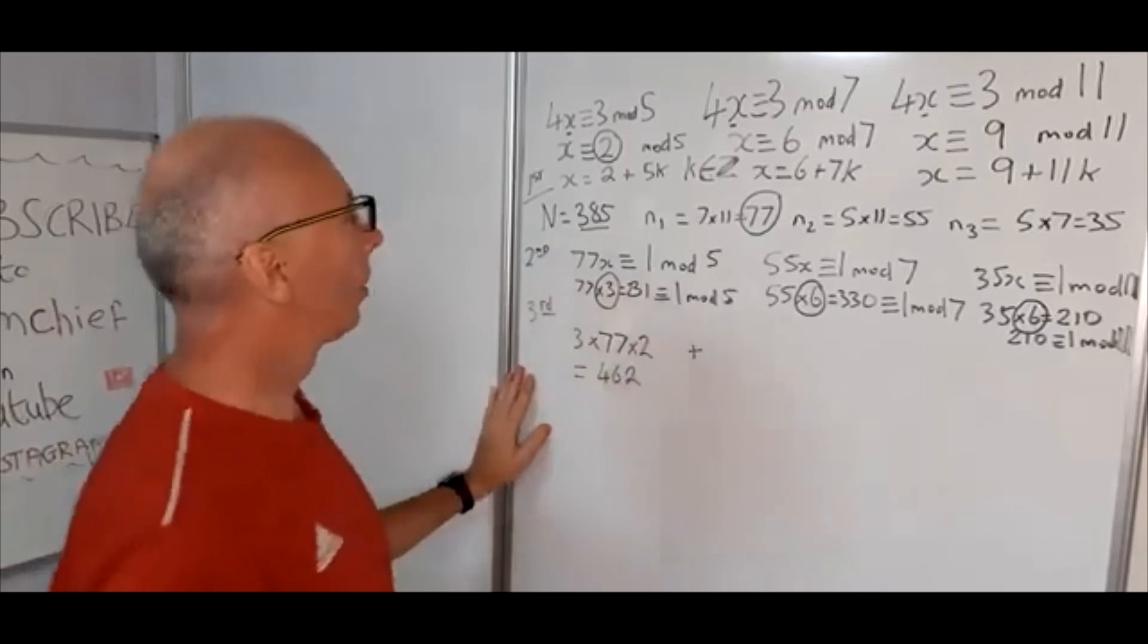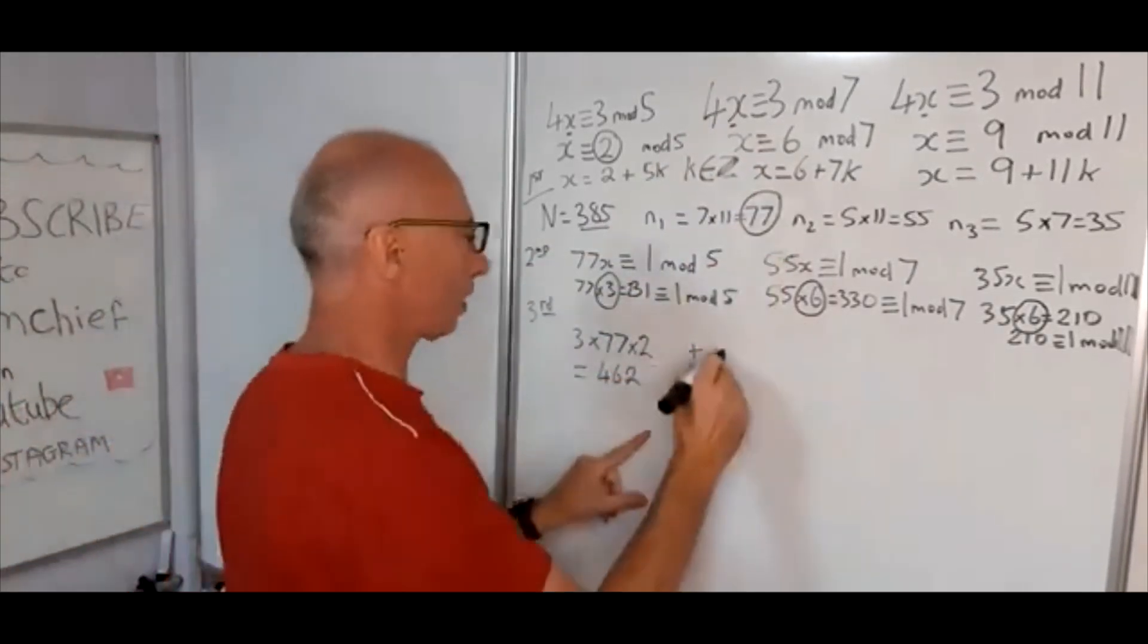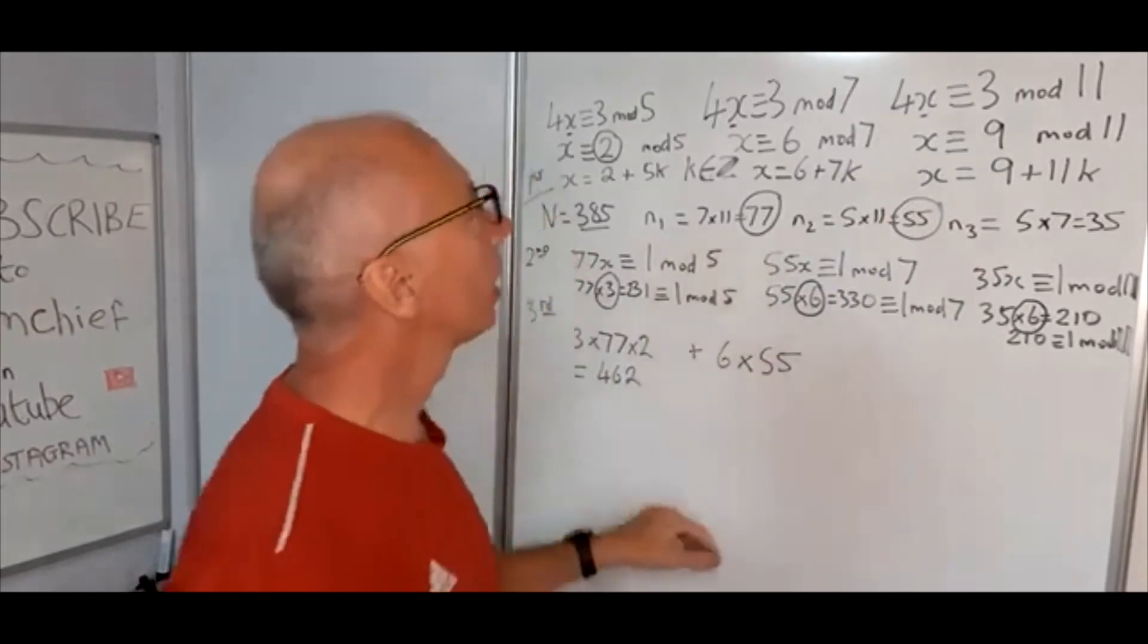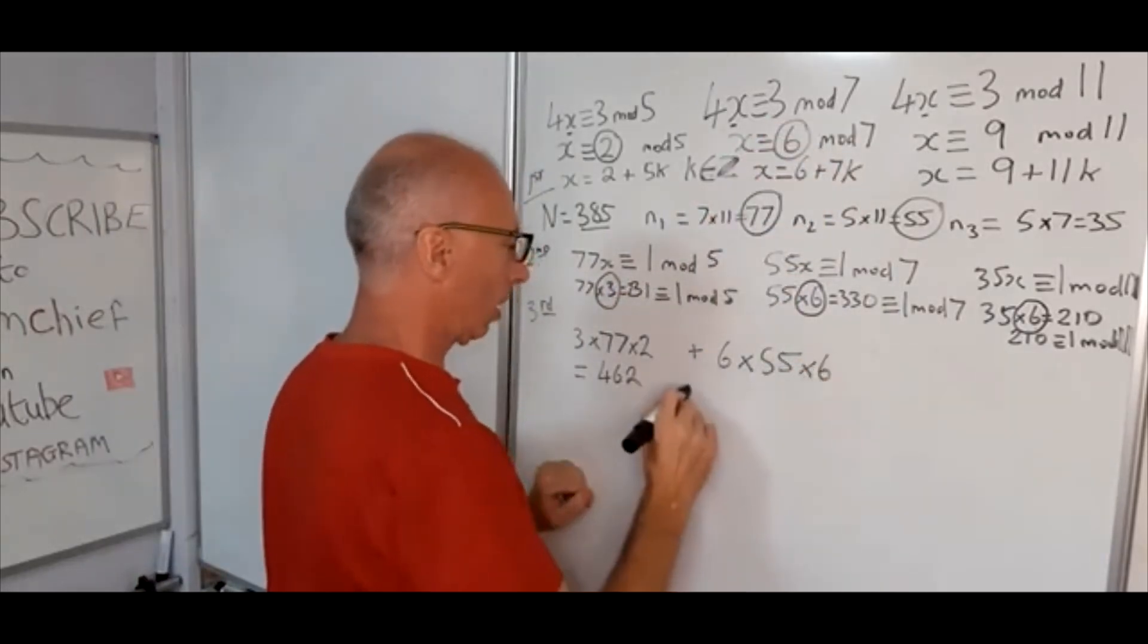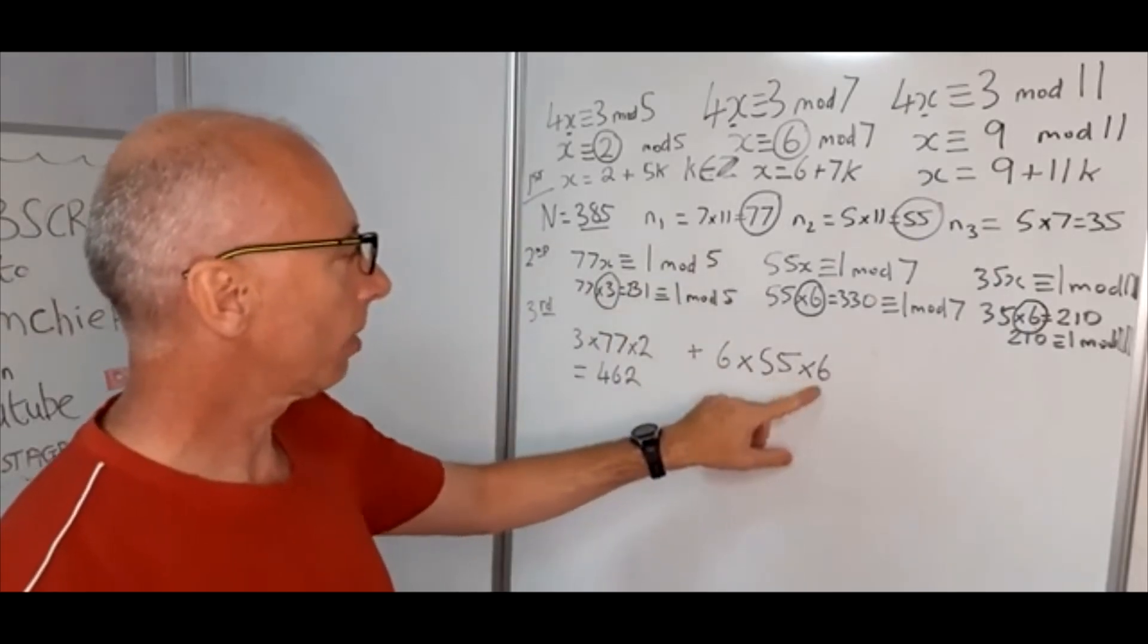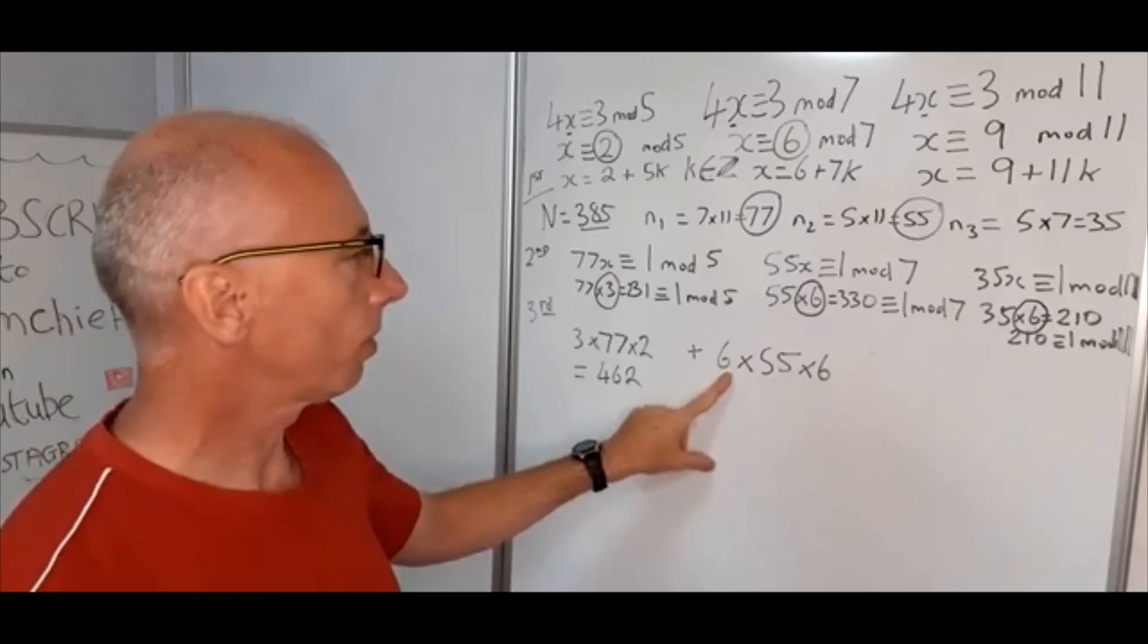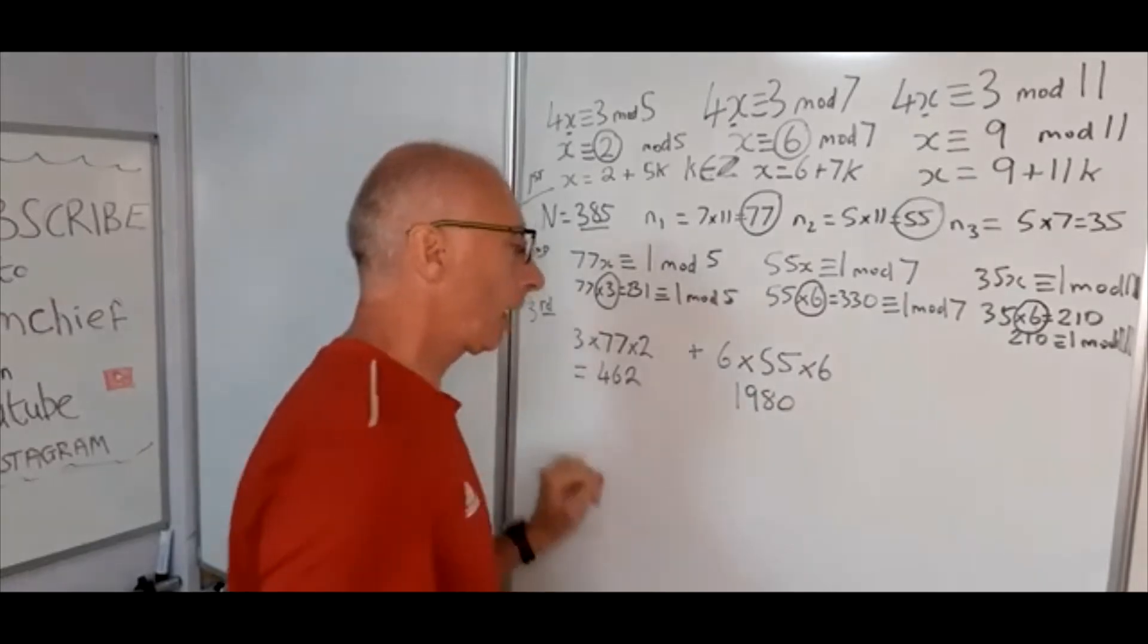And now we're going to add on the ones for the second line of solutions. So the multiplicative inverse is 6. The modulo that we were interested in there is 55. And our congruence on the solution here is 6. So multiply these up. 55 times 6 times 6. So 55 times 6 is 330. 330 times 6. Well 6 times 33 is 198. So that's 1,980. So that's adding that.